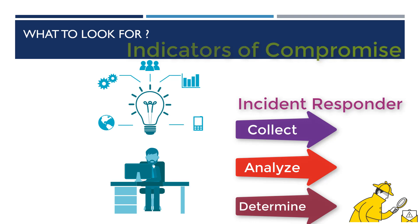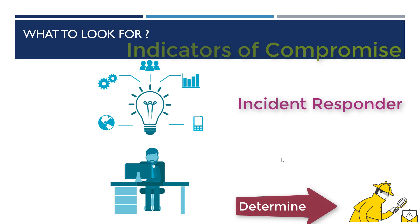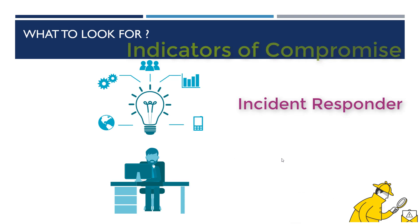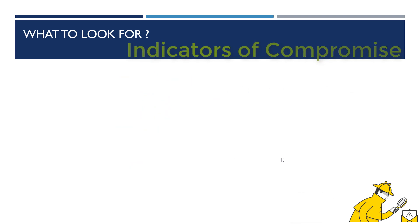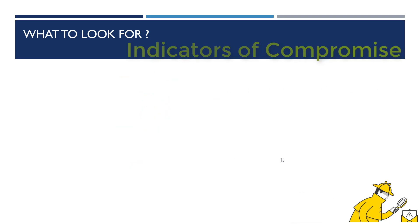We as incident responders or security enthusiasts need to collect, analyze, and then determine whether or not a specific threshold is met for a particular infection to have occurred. The most common indicators of compromise that we're going to discuss in this video series include inbound and outbound network traffic anomalies.